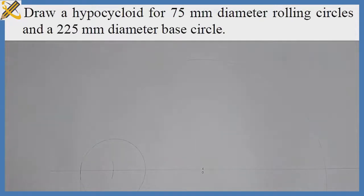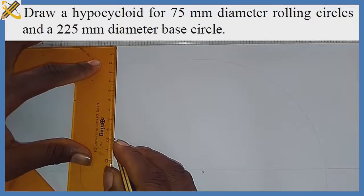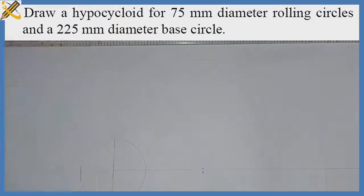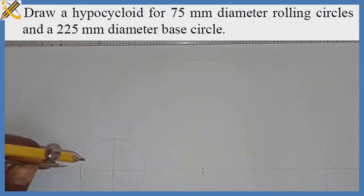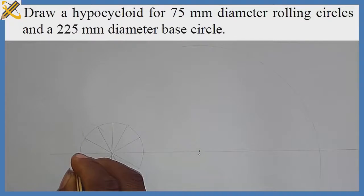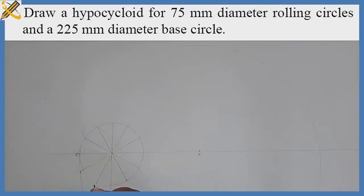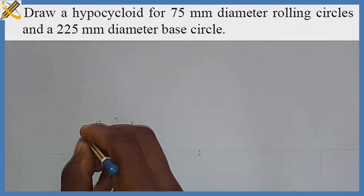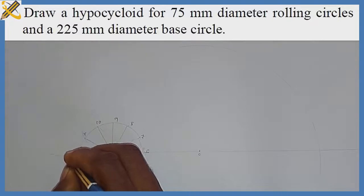First I produce a perpendicular on this circle. The next procedure is to divide that smaller circle into 12 equal parts. After dividing the circle into 12 equal parts, the next thing is to do the numbering: 0, 1, 2, 3, 4, 5, 6, 7, 8, 9, 10, 11, then 0 over 12.